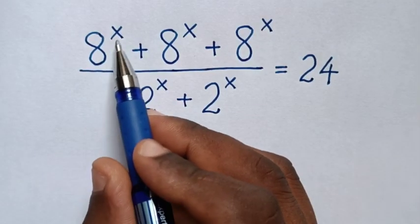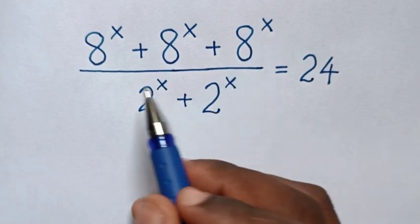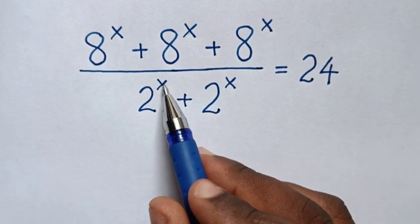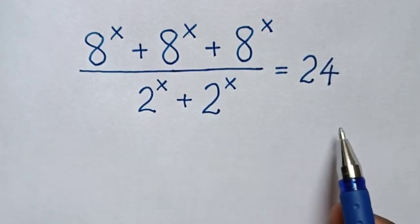Hello! How to solve 8 power x plus 8 power x plus 8 power x over 2 power x plus 2 power x is equal to 24 to find the value of x from this equation.